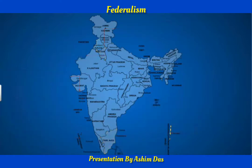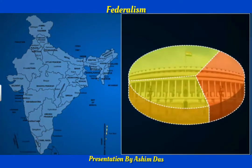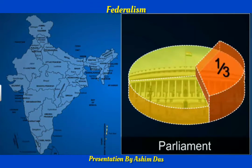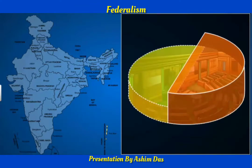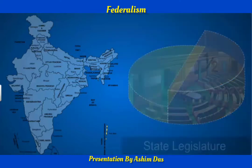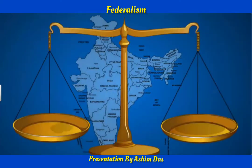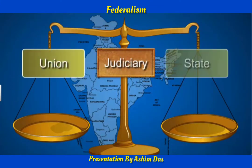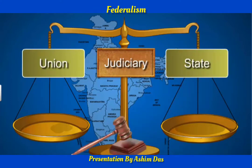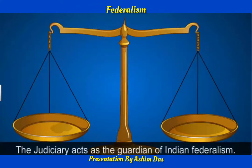It is very difficult to make changes in India's power-sharing arrangement, as any change has to be approved by a one-third majority in both houses of parliament, and then by the legislatures of half of the total number of states. Another important aspect that makes India a federal country is the judiciary. The judiciary administers both union and state laws, and in case of any dispute about the division of power, the High Court and Supreme Court make a decision. Hence, the judiciary acts as the guardian of Indian federalism.